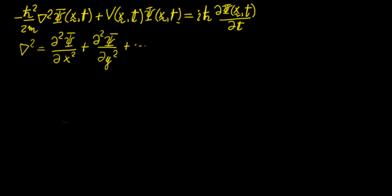Here we have the reduced Planck's constant ℏ, and the mass of the particle — so if this represents the wave function of a particle, this is going to be its mass. Here we have a potential function V, which is just a function of the potential energy associated with the system. On the right side of the equation we have the imaginary unit i, the reduced Planck's constant again, and the time derivative of the wave function. This all seems complicated but let's see if we can infer some meaning from it.